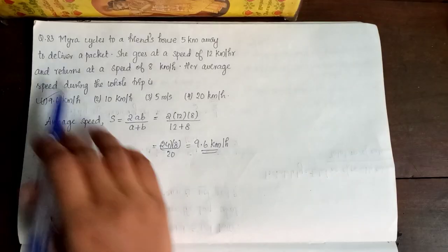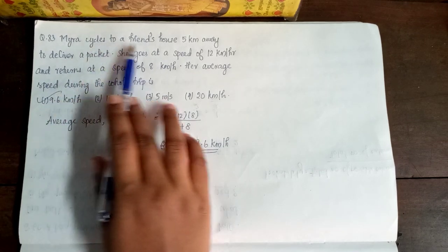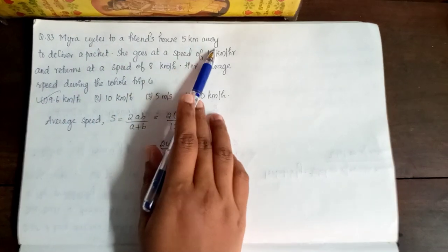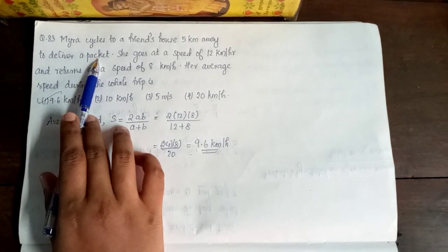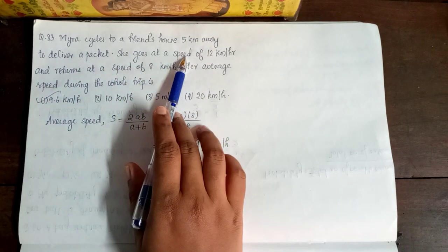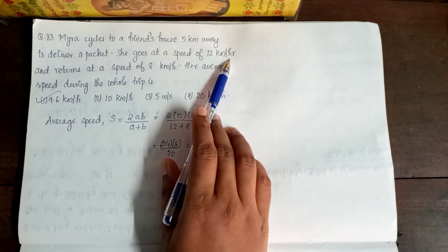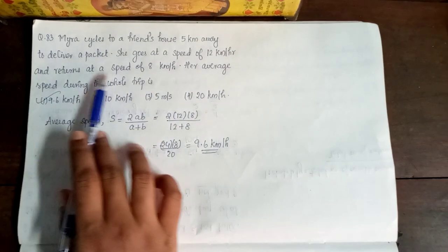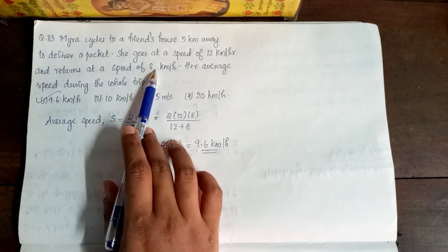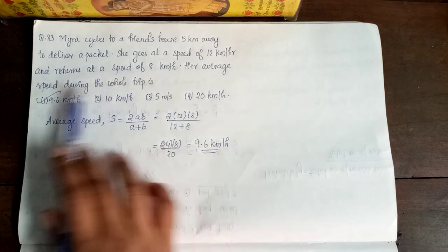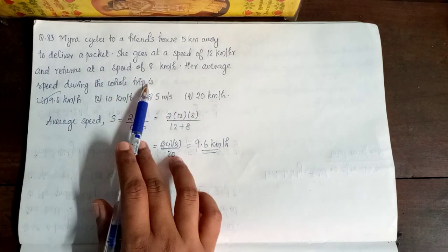Next question is 83. Mayra cycles to a friend's house 5 km away to deliver a packet. She goes at a speed of 12 km per hour and returns at a speed of 8 km per hour. Her average speed during the whole trip is...